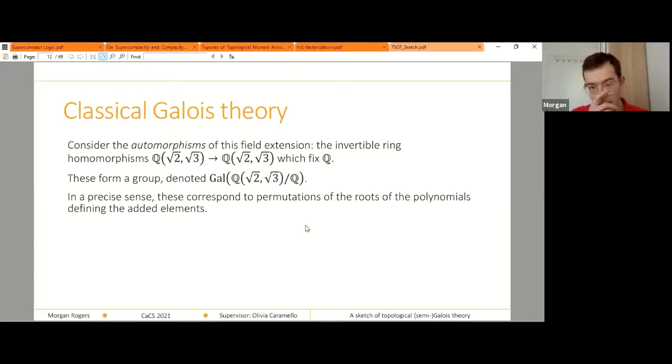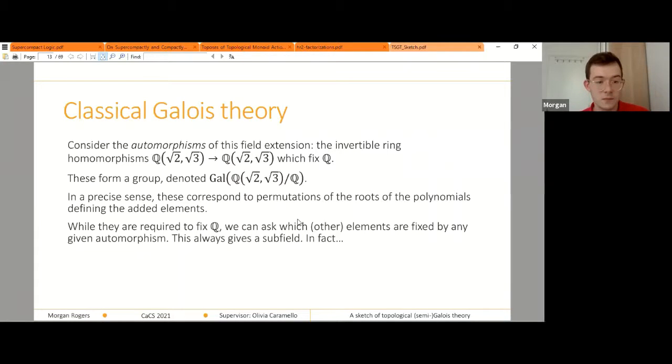So in a precise sense, these correspond to permutations of the roots of the polynomials defining the added elements. So I don't have a way to write on this screen, so I'll just have to say it verbally. But take for example the square root of two. It's defined by the fact that x squared minus two equals zero. But we know that because any automorphism has to fix two, we know that root two has to get mapped by an automorphism to something whose square is still two, which means that there are only two places that the square root of two can go, which is plus or minus the square root of two. And similarly for the square root of three.